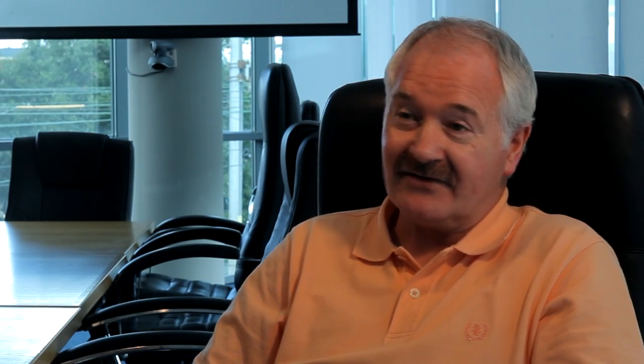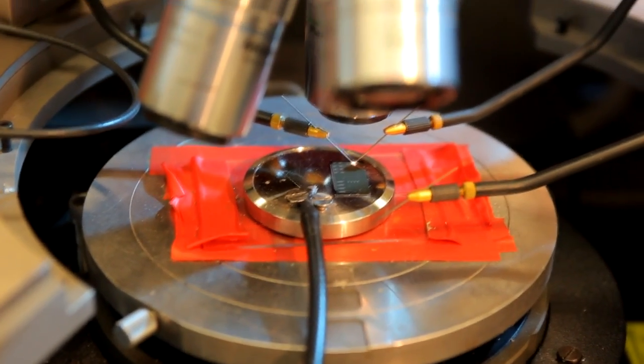What we're working on are nanowires which display memristance. Nanowires are spaghetti-like objects. They can be made of different materials—they can be metals, they can be semiconductors.